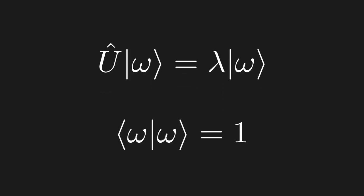Before connecting this to quantum mechanics, let's lay down one more fundamental property of unitary operators. Let's say omega is a normalized eigenvector of unitary operator u. Since omega is normalized, its inner product with itself must be equal to 1. Now, let's act u on omega, and take its inner product again. Since omega is an eigenvector, u will simply return the corresponding eigenvalue.